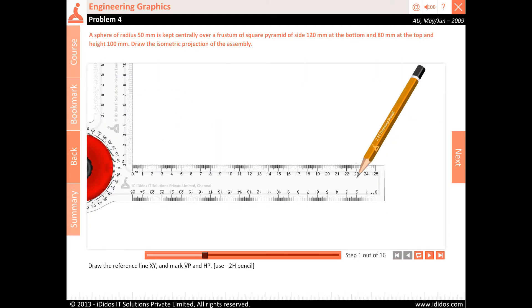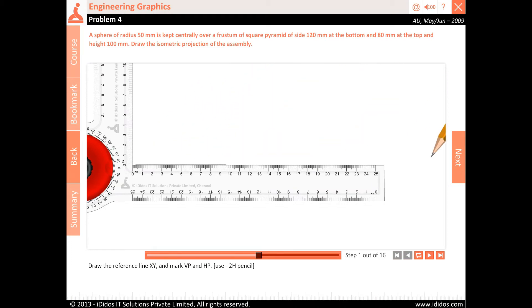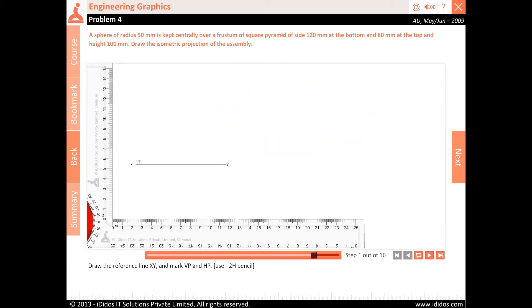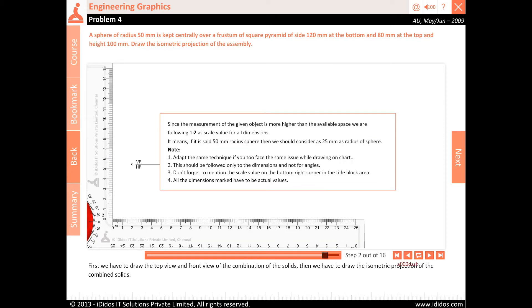Draw the reference line XY and mark VP and HP. Use 2H pencil. First we have to draw the top view and front view of the combination of the solids. Then we have to draw the isometric projection of the combined solids.